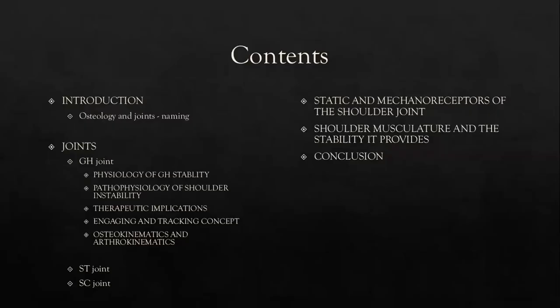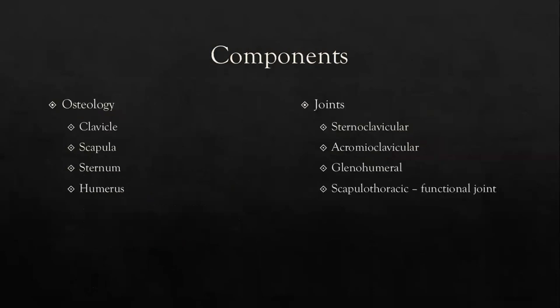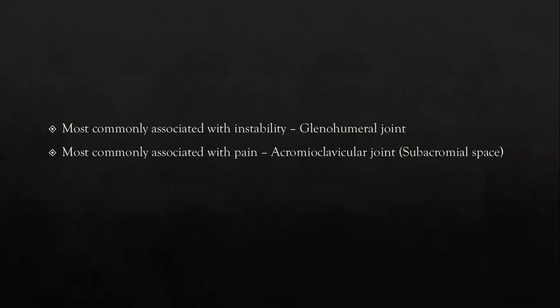Before we start, a brief overview of the anatomy relevant to biomechanics. Dr. Dharani has already mentioned the osteology and joints involved in the shoulder: the clavicle, scapula, sternum, humerus, and the joints — sternoclavicular, acromioclavicular, glenohumeral, and scapulothoracic. The glenohumeral joint is most commonly associated with instability as it is the most mobile at the expense of stability. The acromioclavicular joint is most commonly associated with pain because of the subacromial space and its contents.